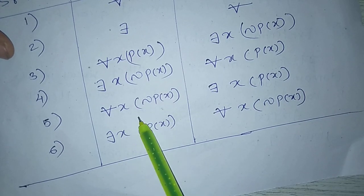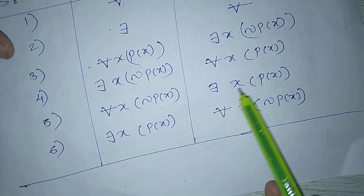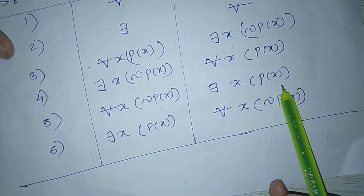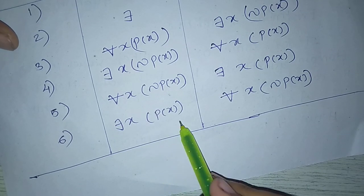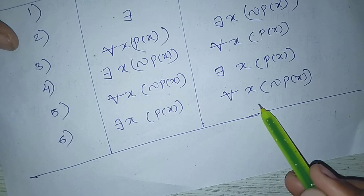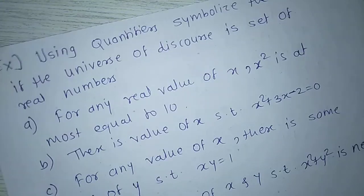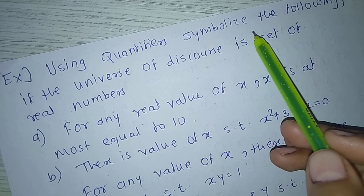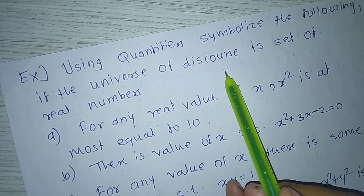Next, the negation of ∃x P(x) is ∀x ¬P(x). Next, using quantifiers, symbolize the following, if the universe of discourse...